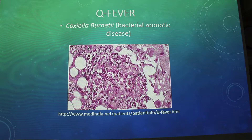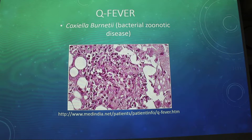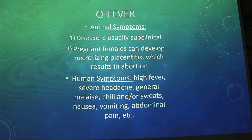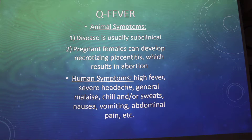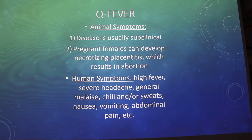Transmission is usually through human inhalation, so it's airborne — of contaminated dust — or it can be direct contact with infected animals or contaminated materials. Animal symptoms: the disease is usually subclinical, but pregnant females, which it does affect more often, can develop necrotizing placentitis, which results in abortion.